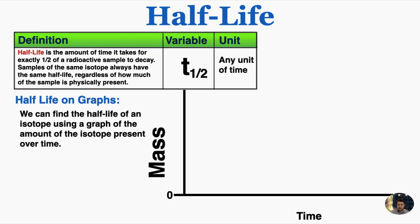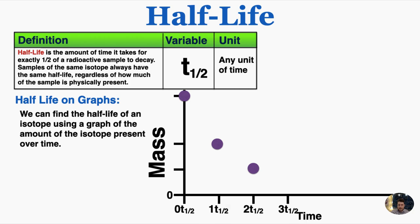The fact that radioactive substances have half-lives causes specific patterns to show up on mass-time graphs, where we graph the mass of a radioactive isotope on the y-axis and the time that has passed on the x-axis. So as an example, when no half-lives have passed, the original mass of the object is present. After one half-life has passed, exactly half of the mass remains. And after another half-life, half of that mass is present. So we keep going up one half-life at a time on the x-axis and cutting the y-axis value in half to fill out the rest of the graph.